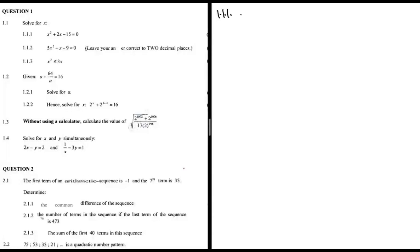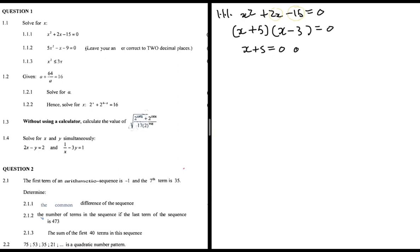For 1.1.1, we have x² + 2x - 15 = 0. I ask myself: which two numbers multiply to give -15 but add to give 2? That's -3 and 5. So we get (x + 5)(x - 3) = 0, giving x + 5 = 0 or x - 3 = 0, so x = -5 or x = 3.